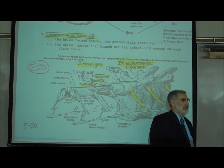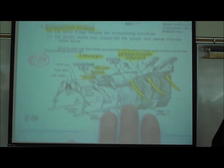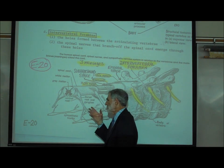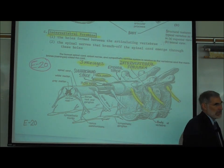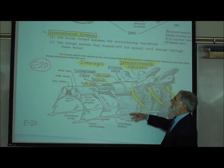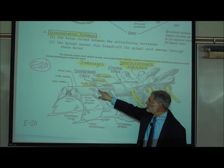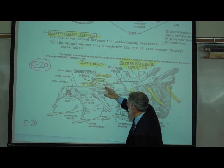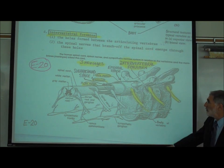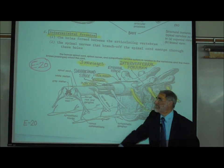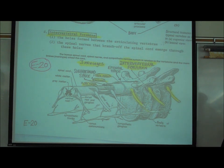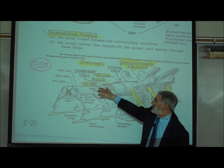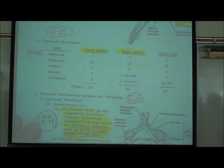The word arachnoid means like a spider web — as in arachnophobia, fear of spiders. The innermost membrane is called the pia mater, a very soft membrane that adheres to the surface of the spinal cord and brain. Pia means soft in Latin — the soft mother. There is an important space between the arachnoid membrane and the pia mater called the subarachnoid space, because it's below the arachnoid. Flowing through the subarachnoid space is cerebrospinal fluid or CSF.